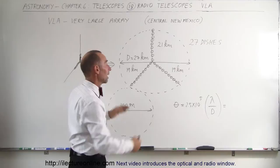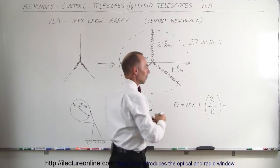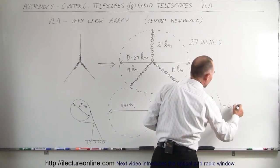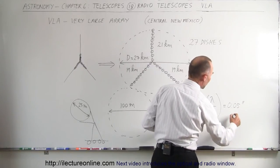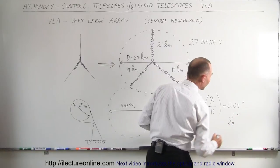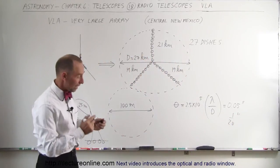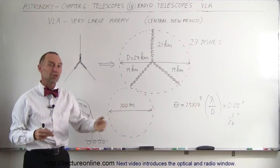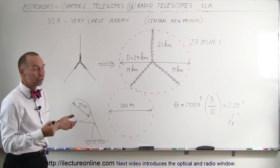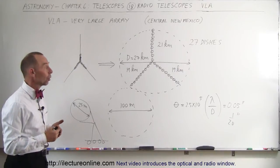And so 27 kilometer diameter compensates for that to the point where the angular resolution is somewhere around 0.05 arc seconds, which is about 1/20th of an arc second, which is really, really good in modern telescope technology. So for radio telescopes to get that kind of resolution, it's absolutely amazing. It's as good as some of our best visual telescopes on Earth.